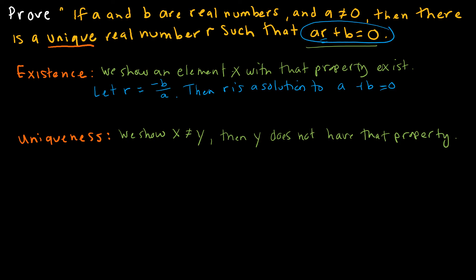Of course, we can always plug it in. So I can say a times r, which is negative b over a, plus b equals 0. If I multiply that out, my a's cancel. I get negative b plus b equals 0, and then I get 0 equals 0. So I have just proved the existence of a value r that is equivalent to negative b over a that is a solution to my equation.